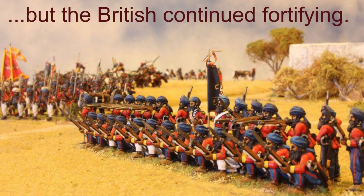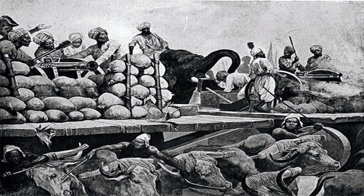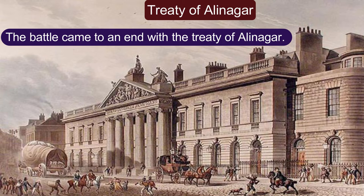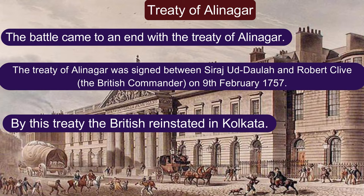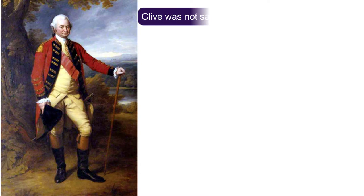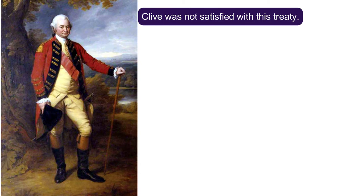Being humiliated by this, Nawab Sirajuddaula attacked the British colony in Calcutta. The battle came to an end with the Treaty of Alinagar, which was signed between Sirajuddaula and Robert Clive, the British commander, on 9th February 1757. By this treaty, the British were reinstated in Calcutta.